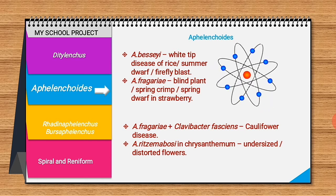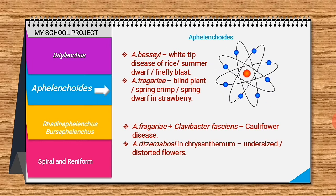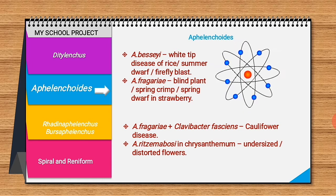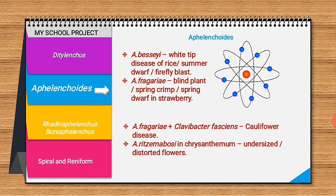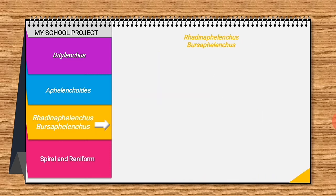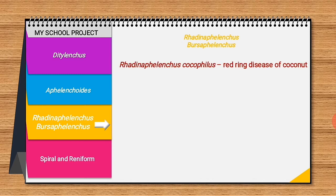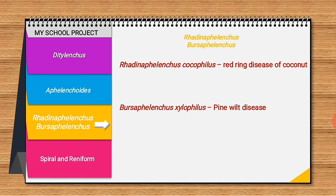Aphelenchoides ritzemabosi in chrysanthemum causes undersized distorted flowers. Rhadinaphelenchus cocophilus causes red ring disease of coconut, which is lethal to three to seven year old coconut palms. Bursaphelenchus xylophilus causes wilting disease in pine forests.